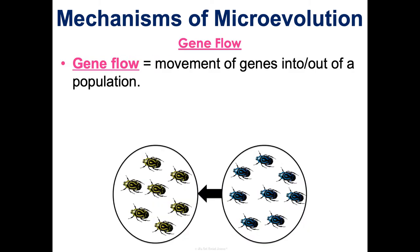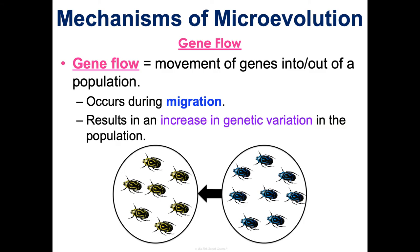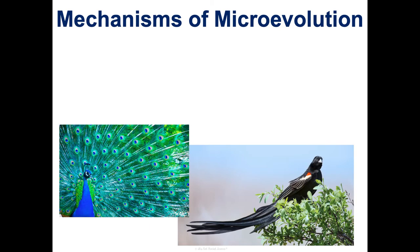Gene flow is the movement of genes into and out of a population — it occurs during migration and causes an increase in genetic variation. For example, if one island has all yellow beetles and another has all blue beetles, and some blue beetles accidentally get on a fishing boat and are brought to the yellow-beetle island, they start reproducing with the yellow beetles. New genes are introduced to that population and variation occurs, driving micro-evolution.